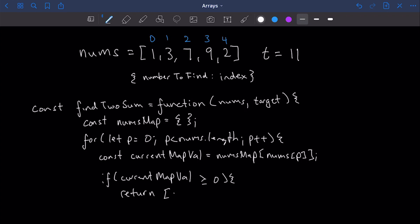So once we see that the current map val is greater than or equal to zero, then what we want to return is an array of the two indices. Now here, one of those values is going to be our current map val, because remember that is the index value. The next thing we're going to return is p, because that is the opposing index of the matching pair.